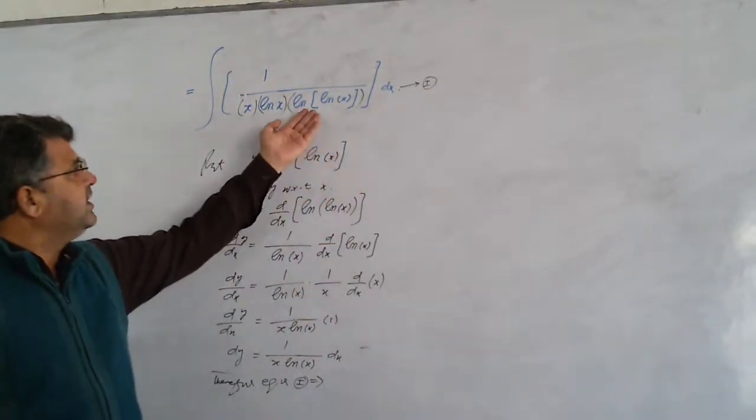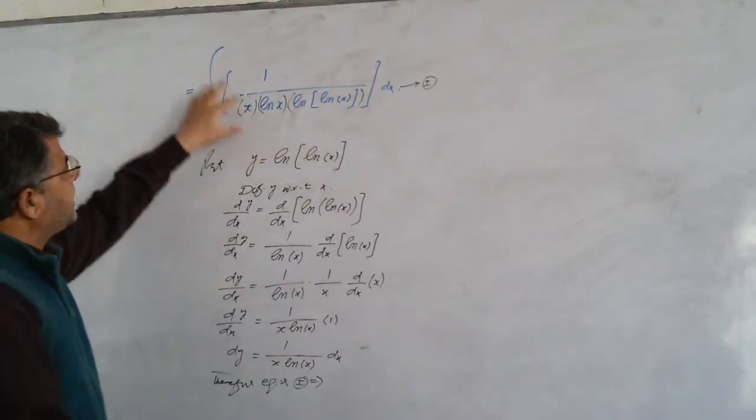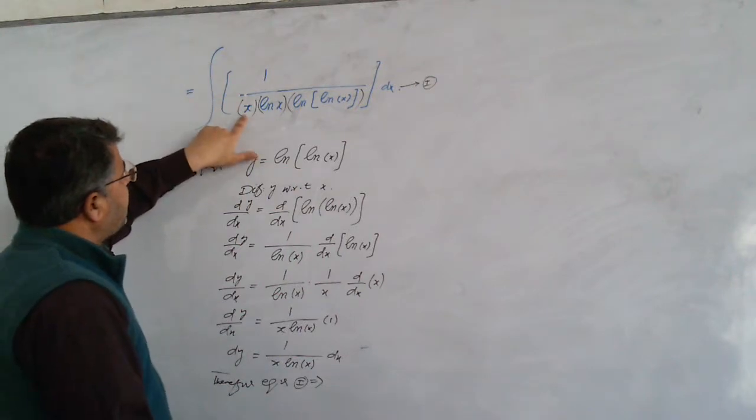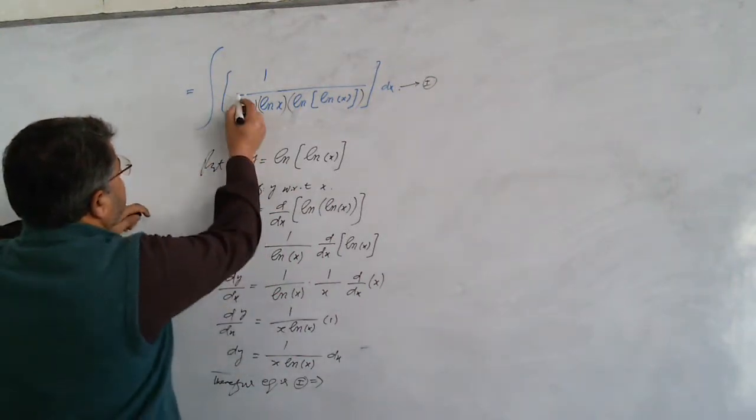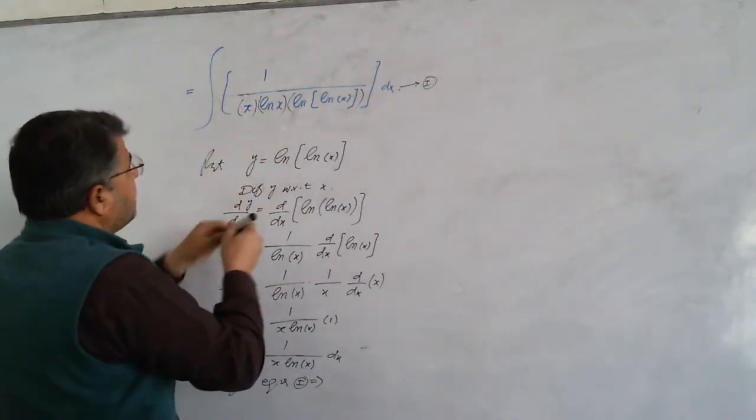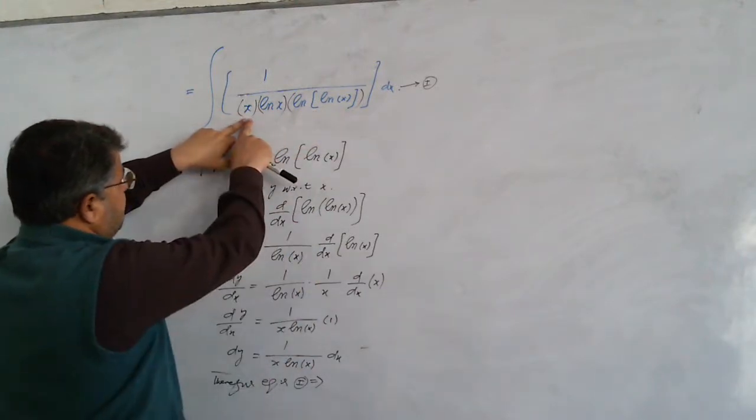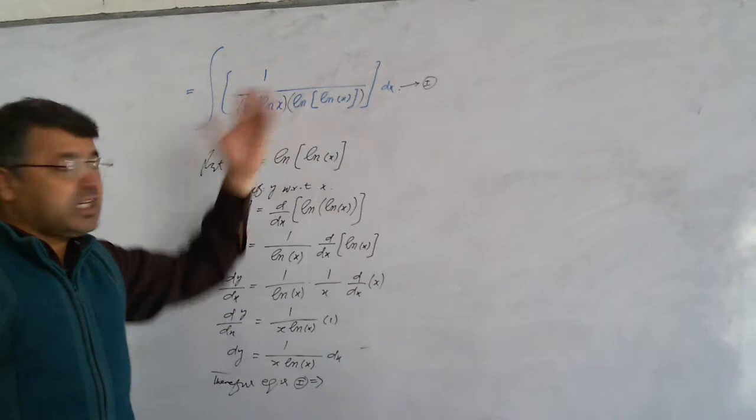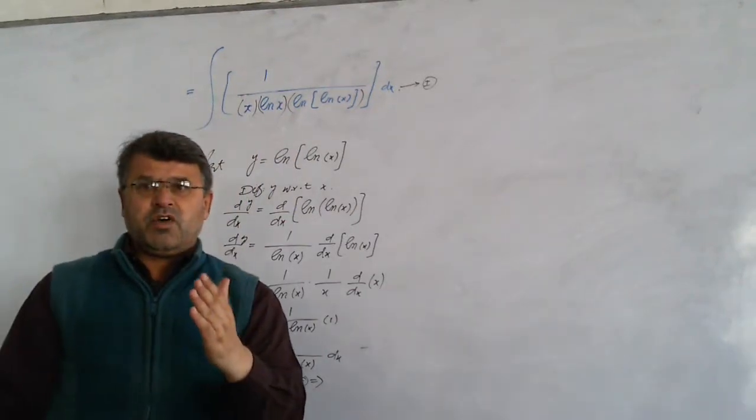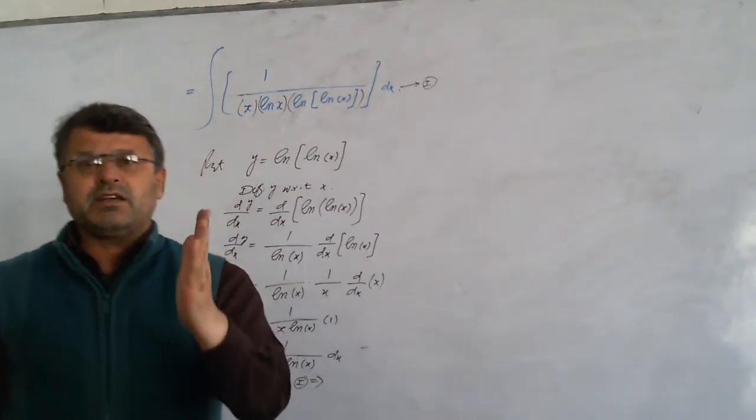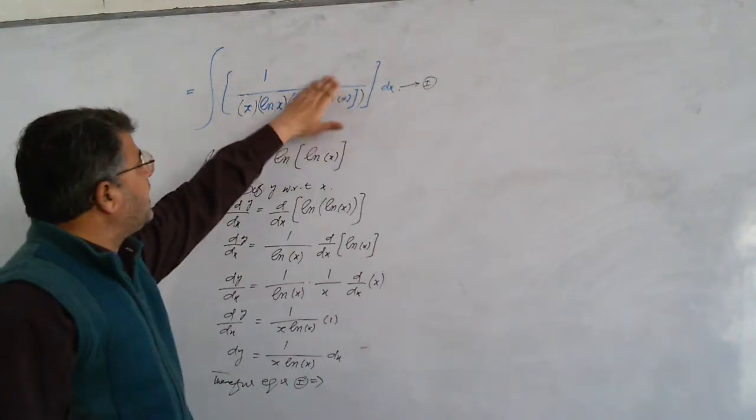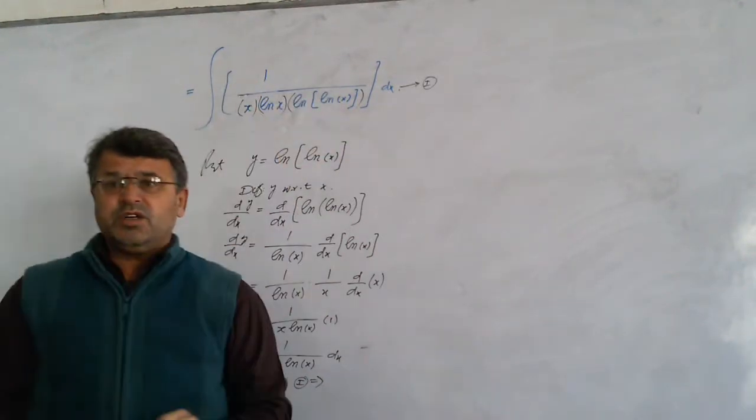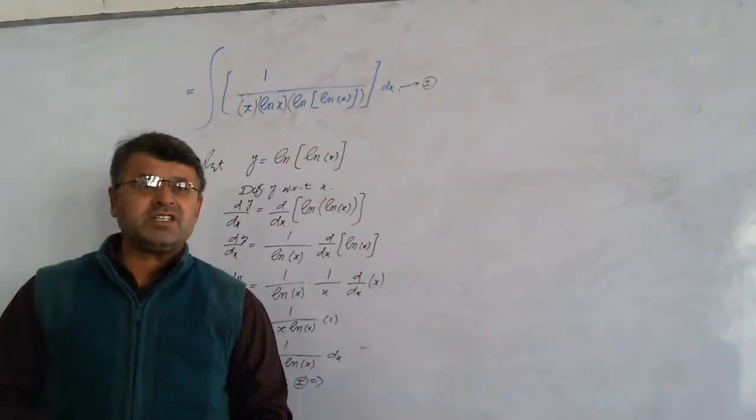The function is 1 divided by x, multiply by x, multiply by x. The function is very complicated. The function is not a direct function. The function is very complicated.